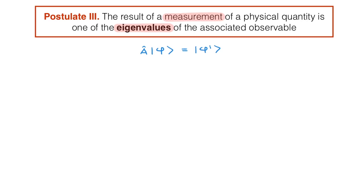We now come to the definition of eigenvalues and eigenvectors of an operator A. We consider the action of A on a special ket psi, such that the only way in which A changes psi is by scaling it by a constant, and we obtain lambda psi.